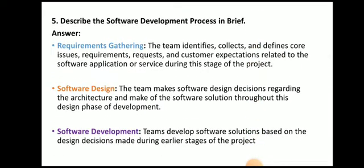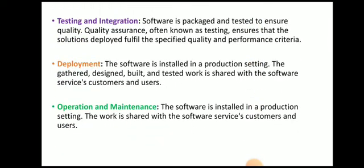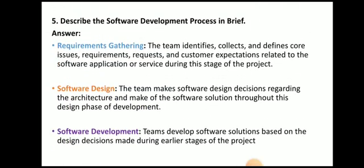Describe the software development process in brief. There are six stages in the development of software: requirement gathering, software design, software development, testing and integration, deployment, and operation and maintenance.